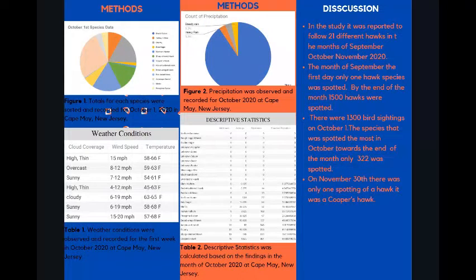Moving on, we have various tables and charts to show how we organized our data. The first chart is a pie chart of the species that were found on the first day of October. Table 1 shows the weather conditions that were recorded for the first week of October. Figure 2 shows the count of precipitation for the month of October. And Table 2 shows the descriptive statistics also for the month of October.